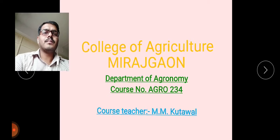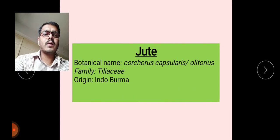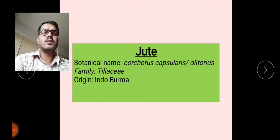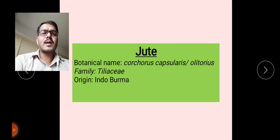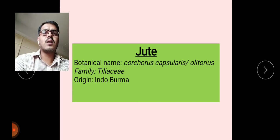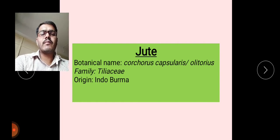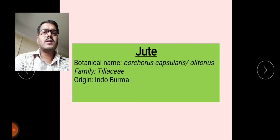In that, we discuss today the second important crop — jute. It is the second important fiber crop. Botanically it is known as Corcorus Capsularis and Corcorus Olitoris. These two species are the two different important cultivated species of jute. Its family is Tiliaceae and the origin place is Indo-Brahma.